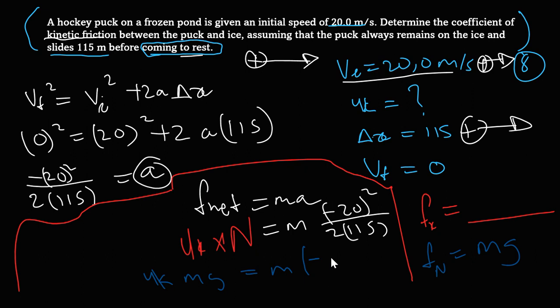Power of negative 20 squared all over 2 times 115. From here we can do something very interesting because you have m and m, we could just cut it up, right?